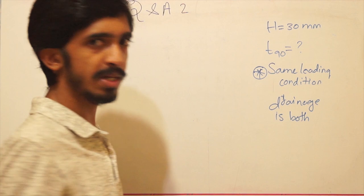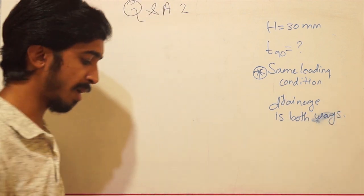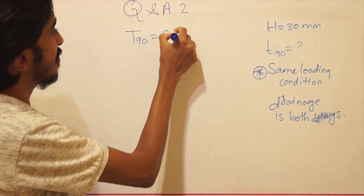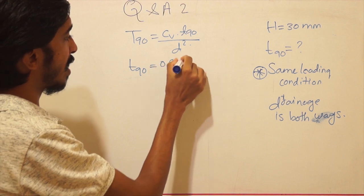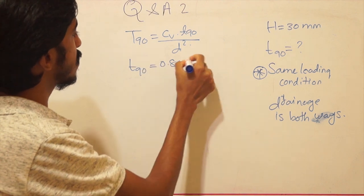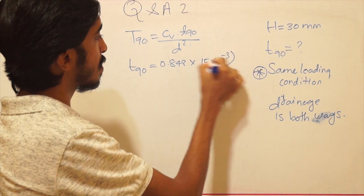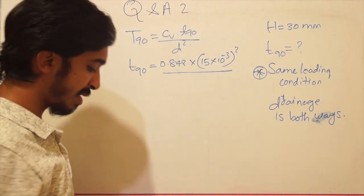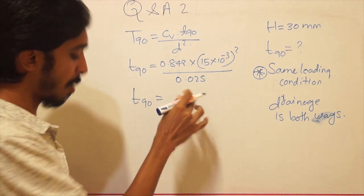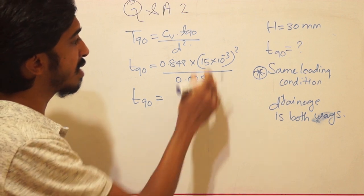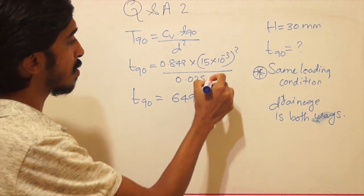Using t90 = T90 × d² / cv, where T90 = 0.848 (already calculated), d = 15 mm = 0.015 meters (half of 30 mm for two-way drainage), and cv = 0.025 m²/day. Calculating t90 gives 649 seconds after unit conversion, since 1 day = 24 × 3600 seconds.